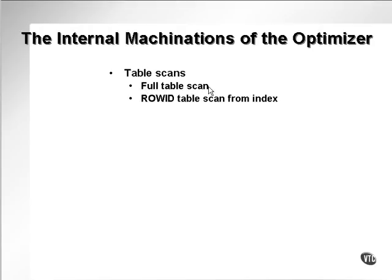Quite often the optimizer will decide to do a full table scan, particularly with small tables, small numbers of rows, and generally static data. Additionally, the user can force or suggest to the optimizer to use a full table scan using something like a hint.